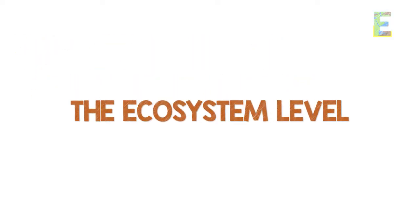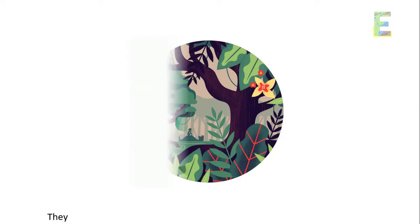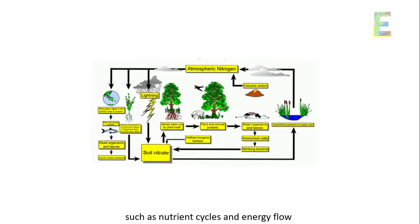The ecosystem level. Ecosystems encompass communities and their physical environment. They include interactions between living organisms and their surroundings, such as nutrient cycles and energy flow.